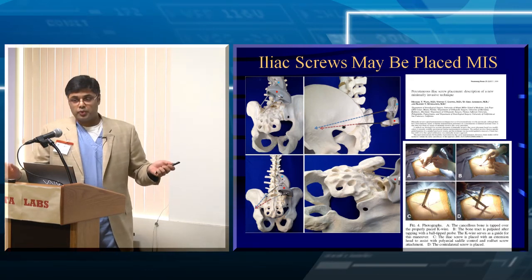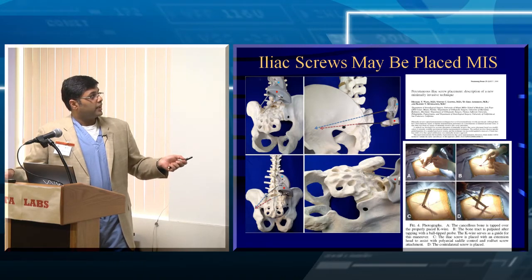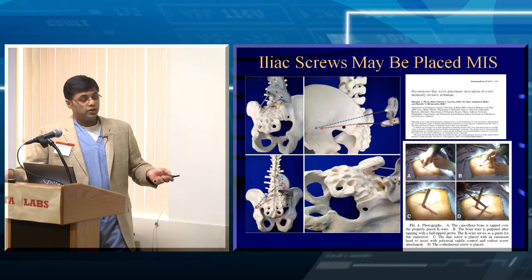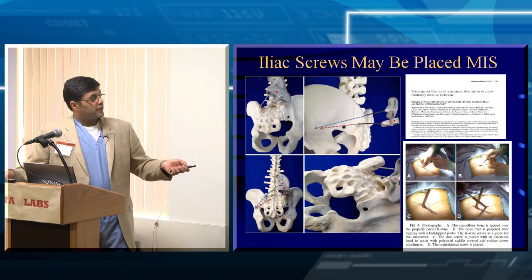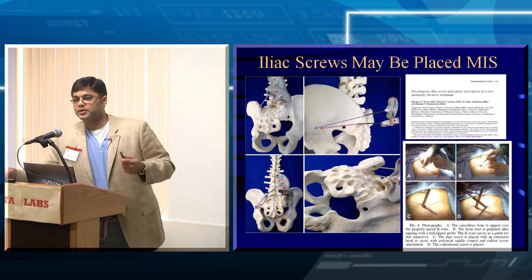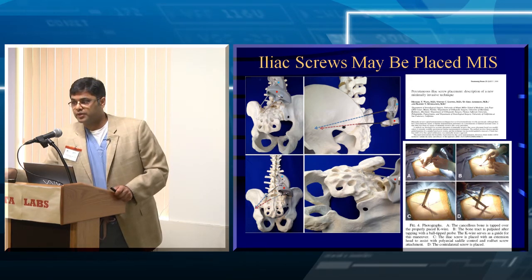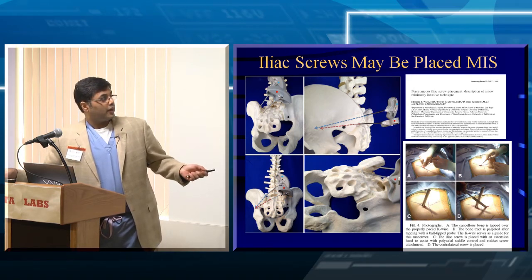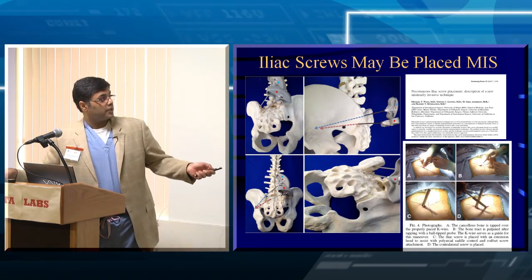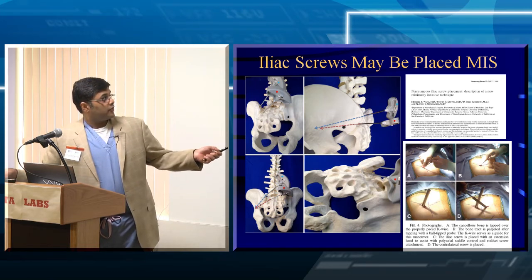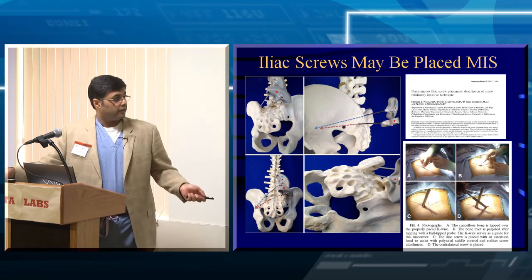You can do iliac fixation in two ways: an iliac screw or an S2AI screw. An iliac screw is typically placed one centimeter superior and one centimeter deep to the PSIS, then trajectories over the greater sciatic notch. You must be careful not to penetrate the greater sciatic notch because you can hit the sciatic nerve and the superior gluteal artery — if you cut that vessel, it retracts into the pelvis and keeps bleeding. We want to get the thick bone right above the notch. The S2AI screw crosses the SI joint and goes over the greater sciatic notch. Both can be placed MIS.